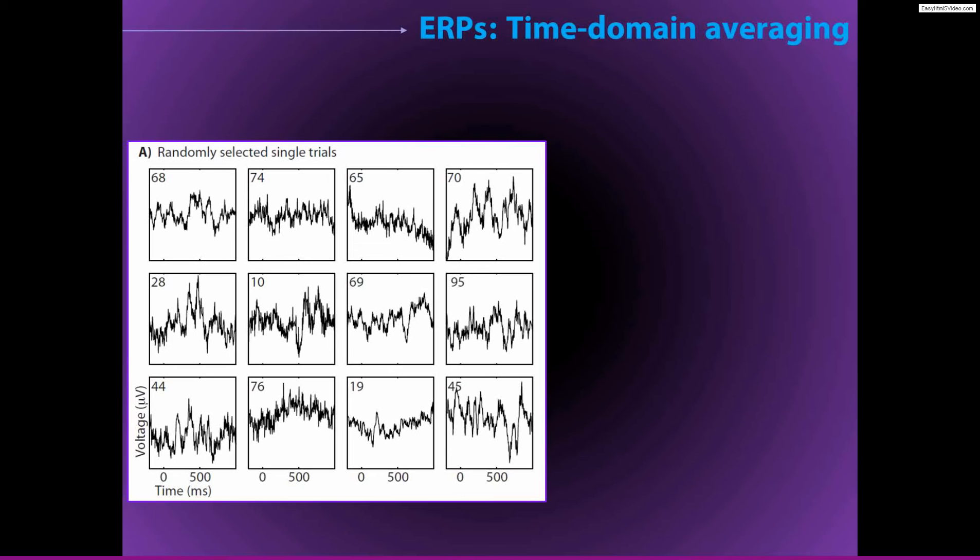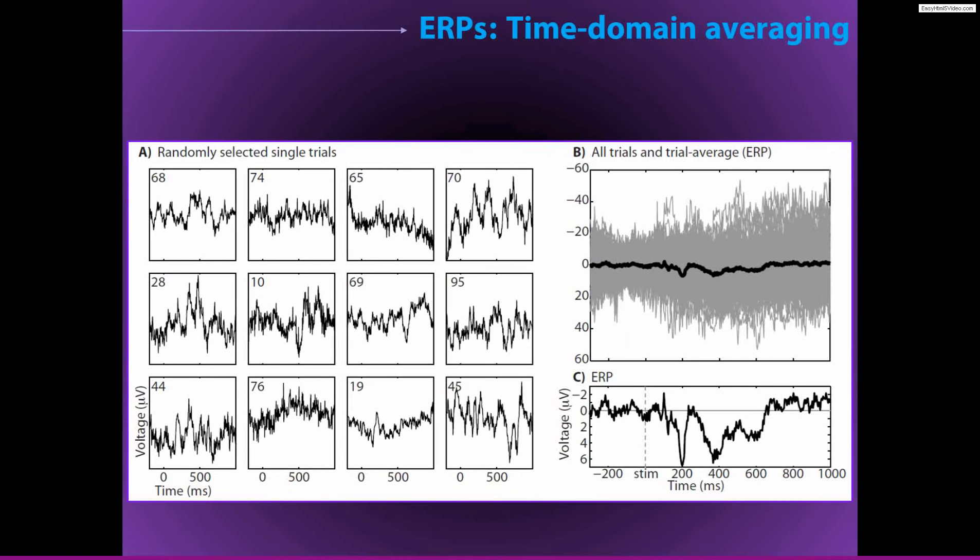If we were to overlay all of these trials, there's 99 trials in this data set. So if we were to overlay all 99 trials on top of each other, we would get this kind of grayish cloud that you can see here.